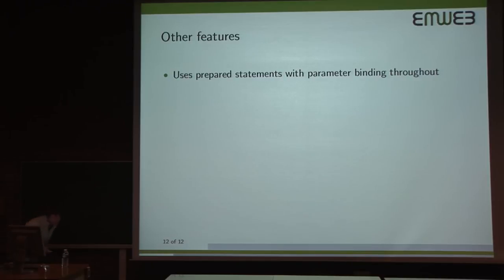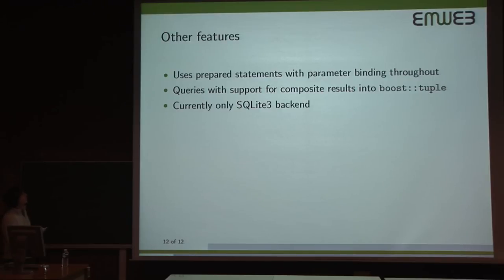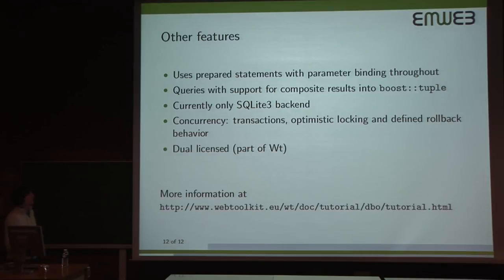So there are some other features which I will briefly list. I already told you that we were using prepared statements throughout. Queries can also be more complex than the ones that we showed. You can have composite results, and it works together with a boost tuple to store the results in. Currently, we only have a SQLite backend, and I welcome any questions about that. There's built-in an optimistic locking scheme for concurrency. It's dual-licensed. It's part of Wt. And if you want to see more information or a more extended tutorial, I recommend to just Google for it or go to this URL on our website. Thank you.